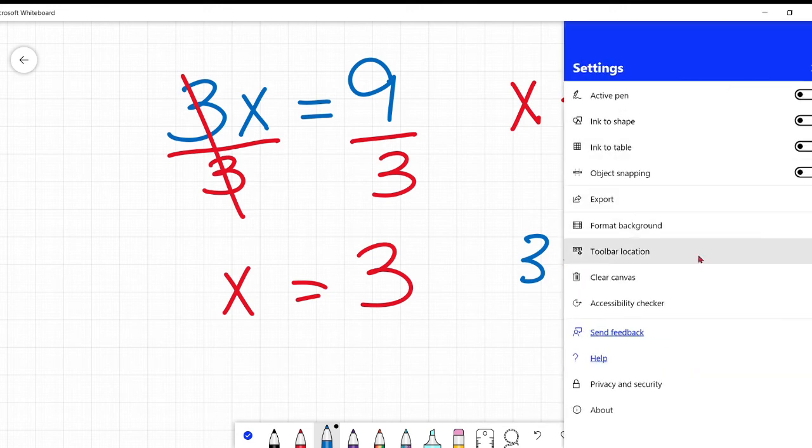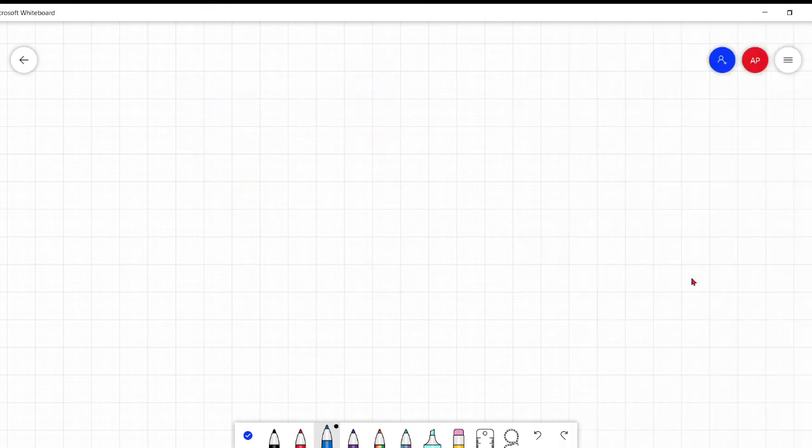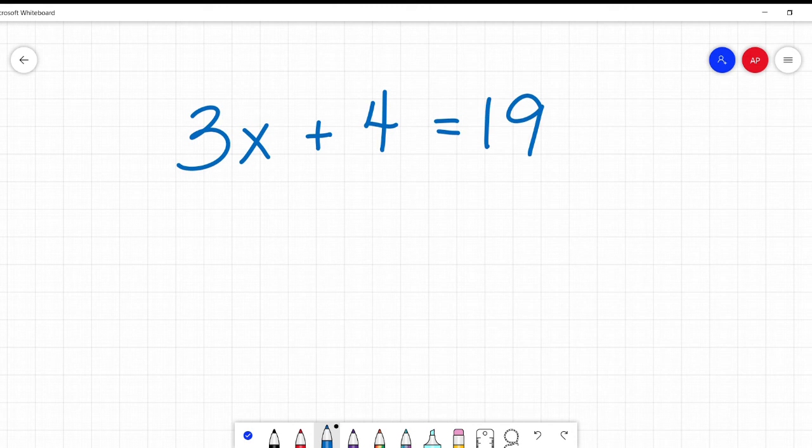Okay, now let's combine those two concepts. What if I had 3x plus 4 equals 19? That's a little harder just to do in our heads. So, let's take it step by step and see what happened to x and how we can undo it. Well, x was multiplied by 3 and then 4 was added. So, we're going to undo those in the reverse order. First, let's undo the plus 4.